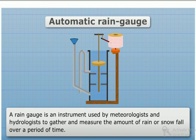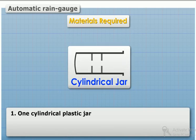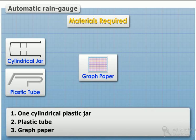Making an automatic rain gauge. A rain gauge is an instrument used by meteorologists and hydrologists to gather and measure the amount of rain or snowfall over a period of time. Requirements: one cylindrical plastic jar, plastic tubes, and graph paper.